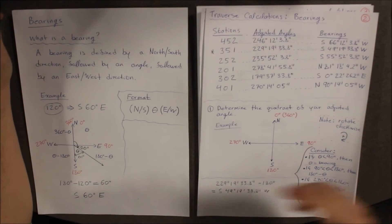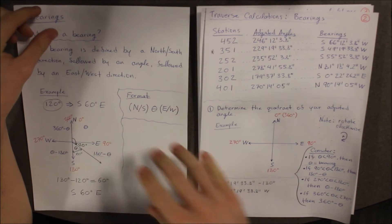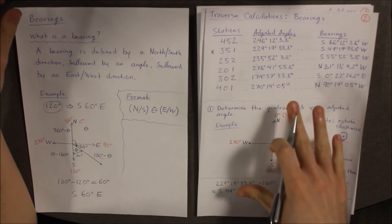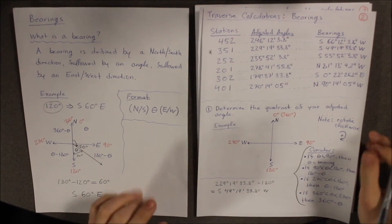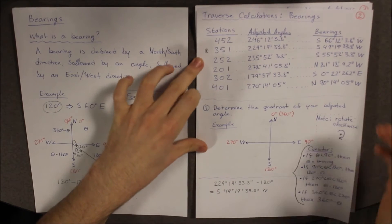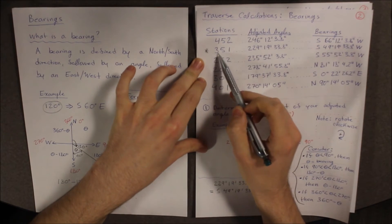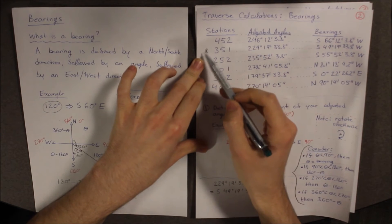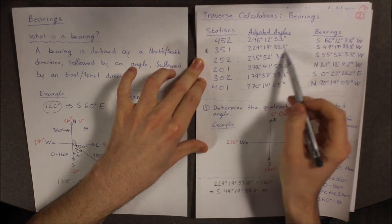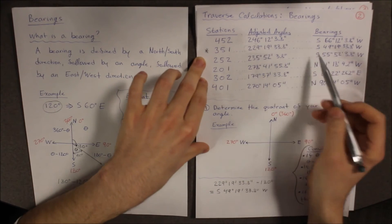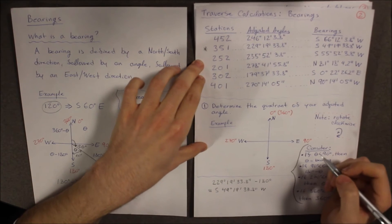Hey guys, so now that you know what a bearing is and now that you understand how it is formatted, we are going to apply it to our real traverse calculations. So for the sake of the example, I am just going to use this point right here. The angle at 351, that is why it is highlighted over here. So we are going to be using this angle to make it into a bearing.